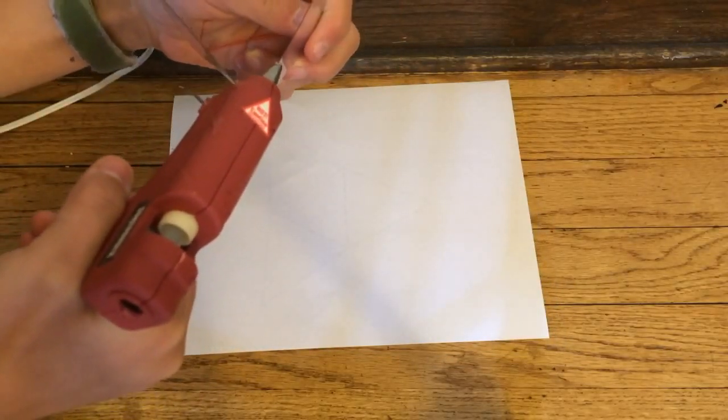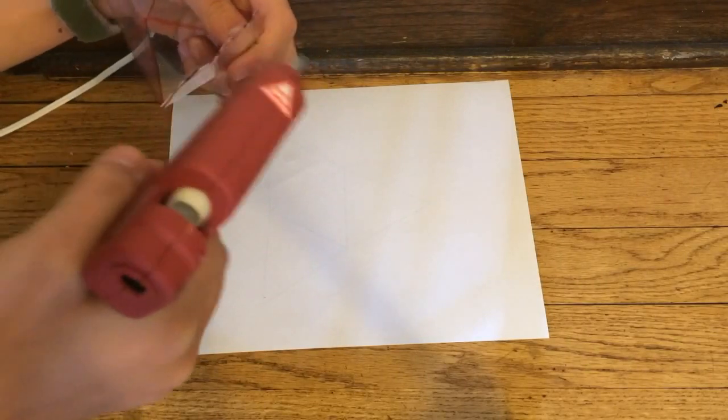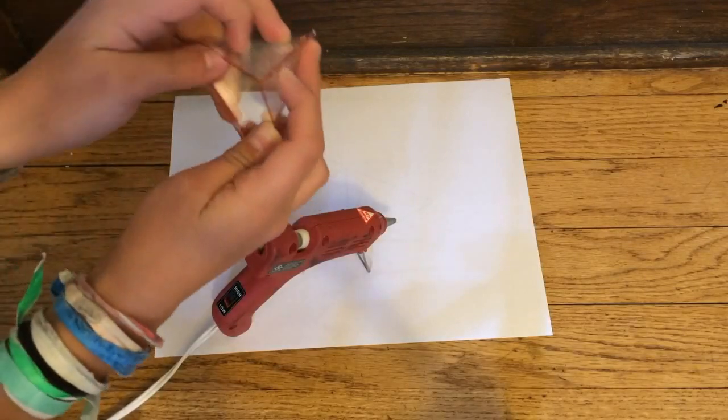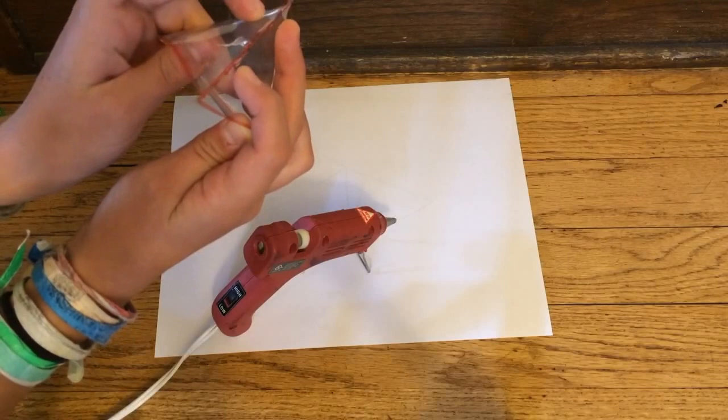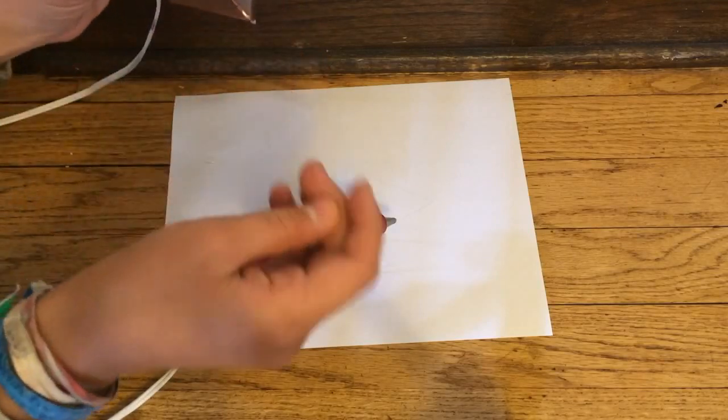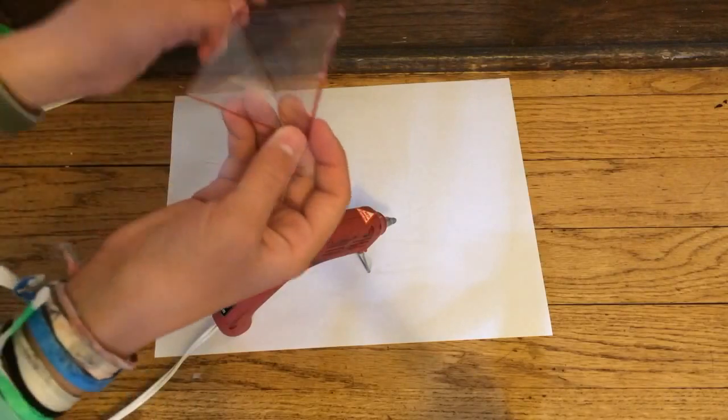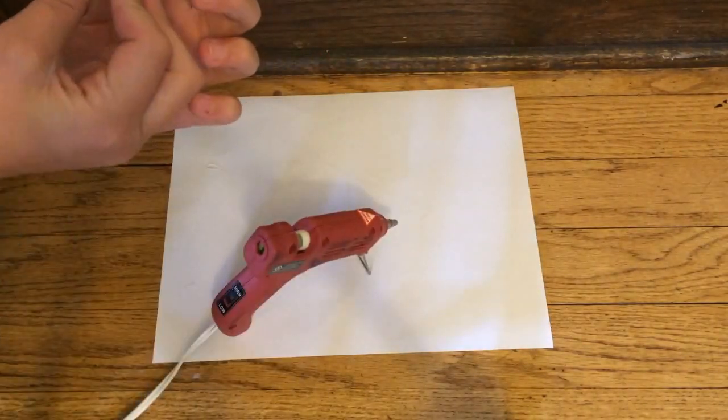And hot glued it together. And this part is kind of hard, but just keep going on it. It might look a little weird, but I know a way to cover it up. I also recommend don't use an orange sharpie. Use like a thin black sharpie.